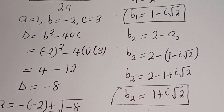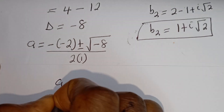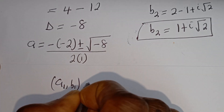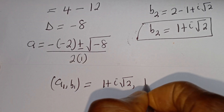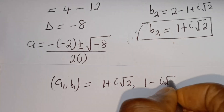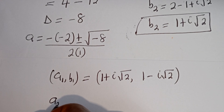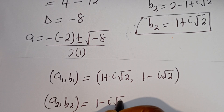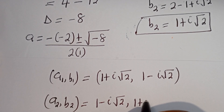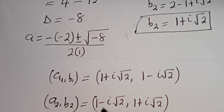Therefore our final answers are: A1, B1 is equal to (1 plus i root 2, 1 minus i root 2). Also, A2, B2 is equal to (1 minus i root 2, 1 plus i root 2). You can see that A1 is equal to B2, and B1 is equal to A2.